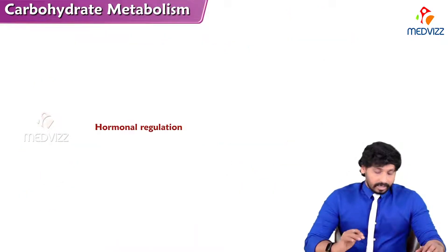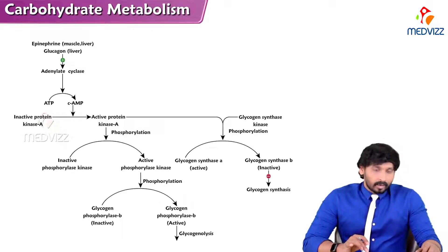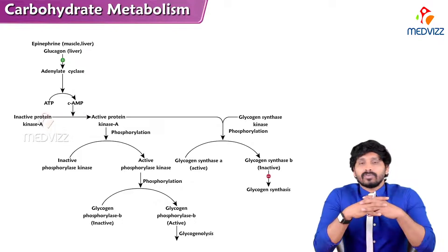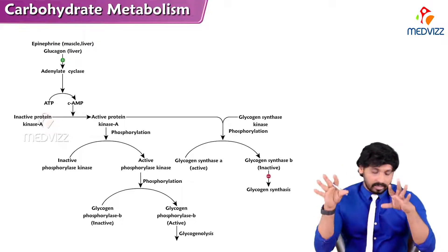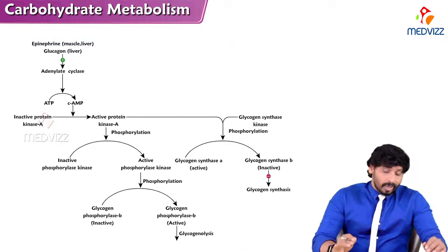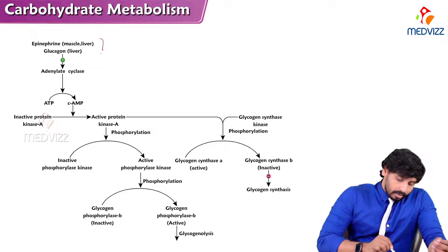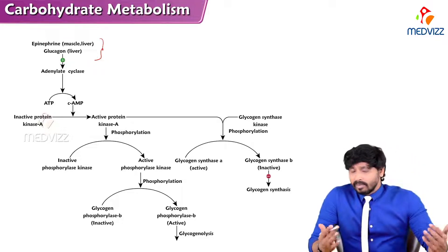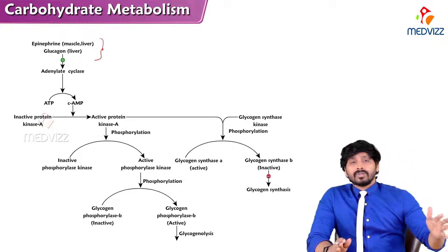That's all about allosteric regulation. Now we'll discuss hormonal regulation, which is a bit more complex. The hormones involved are insulin, epinephrine, and glucagon. Insulin acts when there are high levels of glucose, promotes glycolysis, and diverts accumulated products toward glycogen synthesis. Epinephrine and glucagon act when glucose levels are low and glycogen breakdown is needed. Both epinephrine and glucagon act in both liver glycogen and muscle glycogen, and are positive modulators for glycogen breakdown.